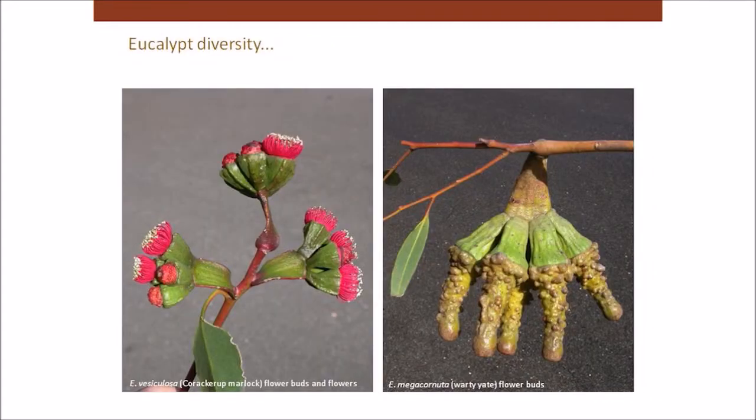One of the things people get out of visiting Currency Creek Arboretum more than anything else is just seeing the sheer diversity in form — from the habit of the plant to the floral form. I've thrown in these couple of slides to show how unusual the flower buds can be. Both these two species have warts on the flower buds, and as far as I'm aware, nobody knows the reason why — nobody knows the evolutionary advantage of having warts on flower buds. It makes it useful for a botanist in identifying the species, but why do eucalypts have all these weird features in some species but not others?